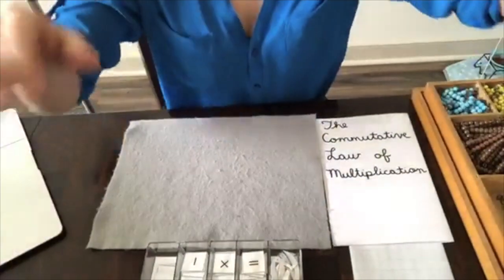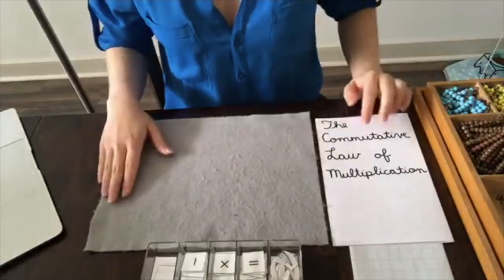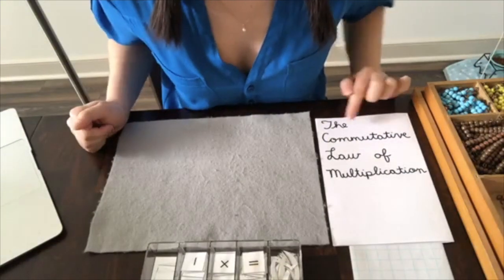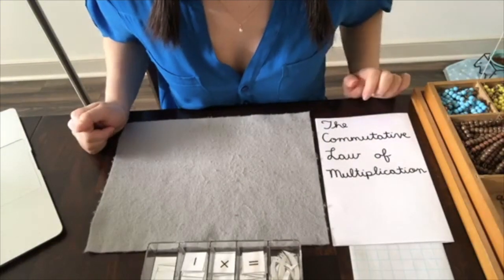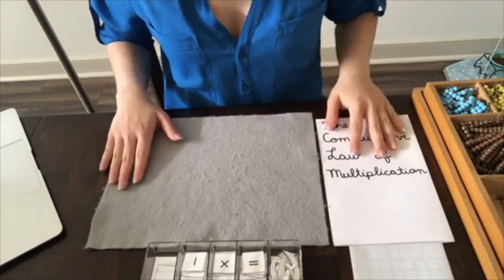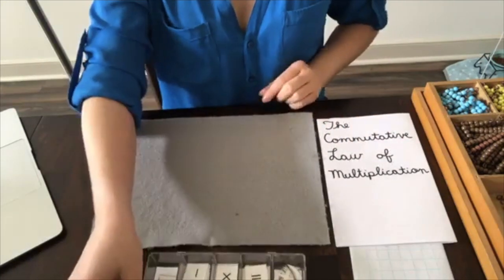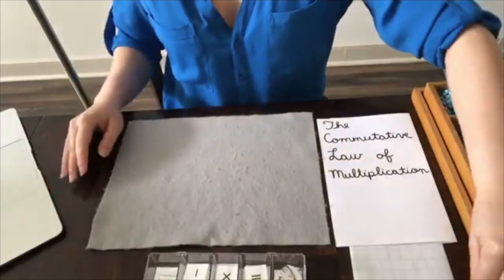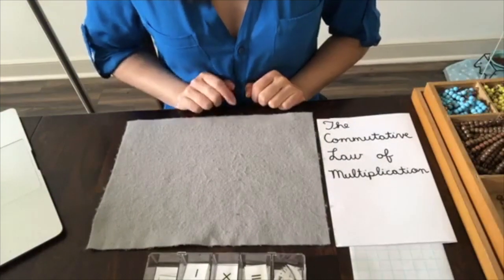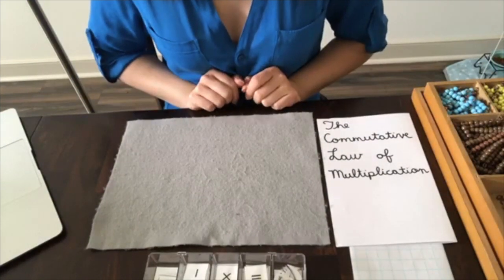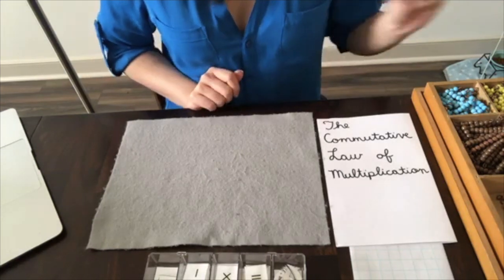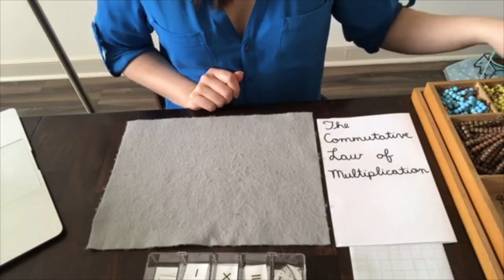As you can see, I've been working on my mirrored writing. So here today, we're going to be working with the commutative law of multiplication. Today, I'm going to show you something new. We've been working with multiplication, and now I'm going to show you something else with multiplication.